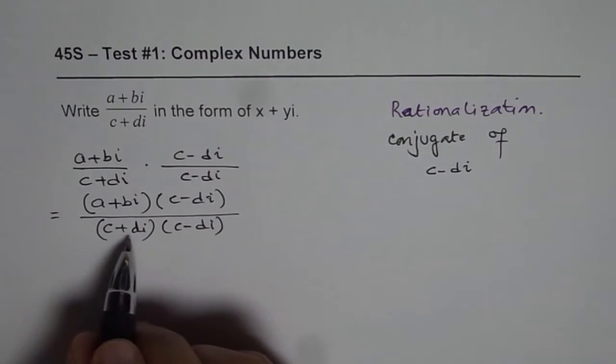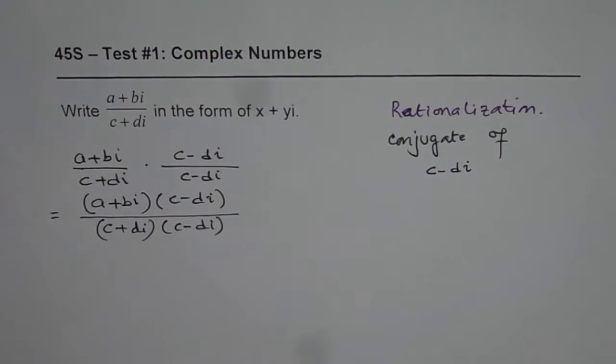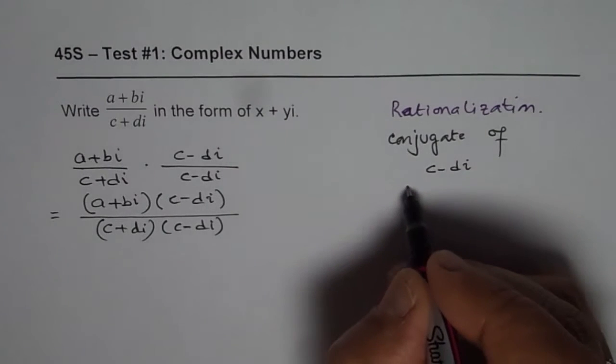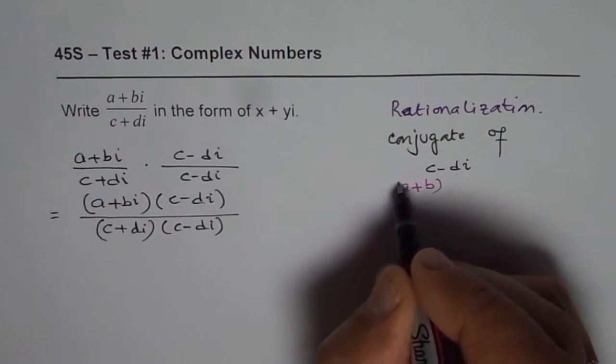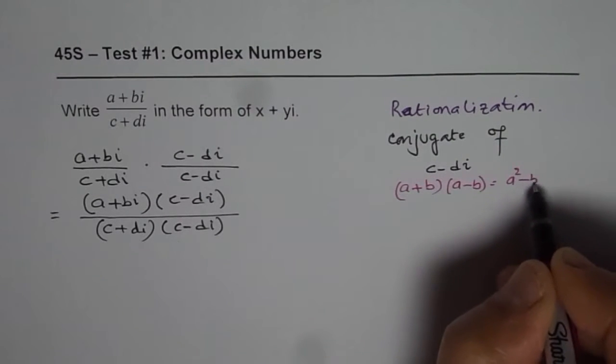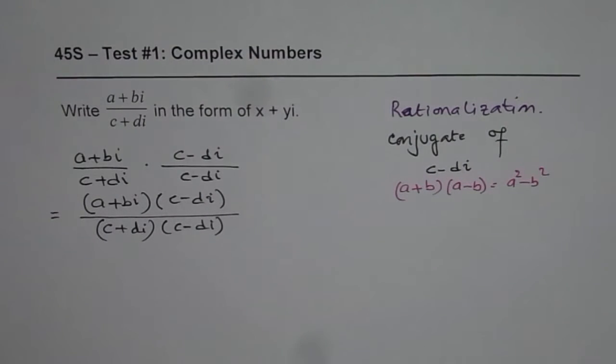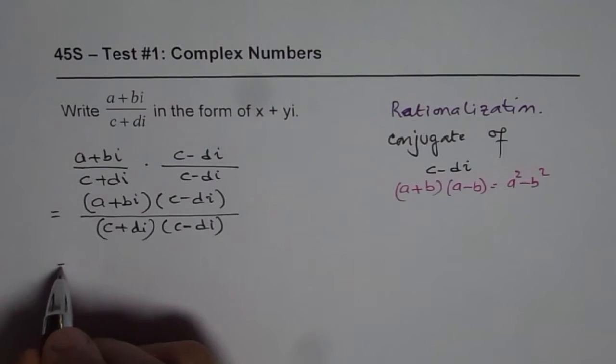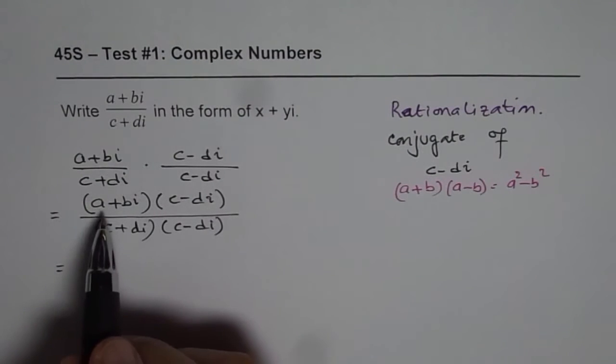I am rewriting it. Now this is a product of sum and difference. As you know, a plus b times a minus b is a square minus b square. We can use that directly also, or we can expand and see what we get. Let us expand.